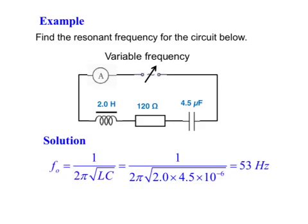Here is an example on resonant frequency. You'll notice you don't need to know the resistance of the resistor. You just need to know the inductance L and the capacitance. Put the numbers in and you get the answer of 53 Hz.